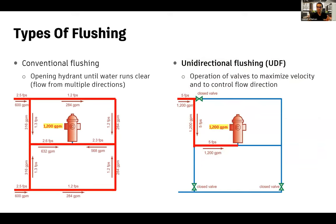Today we're going to put flushing into two categories: conventional and unidirectional. With conventional flushing, you open a hydrant and keep it open until the water runs clear. Flow comes in through various pipes in your distribution system and velocities are rather low — maybe one to two, maybe two and a half feet per second max, depending on your pipe diameters.